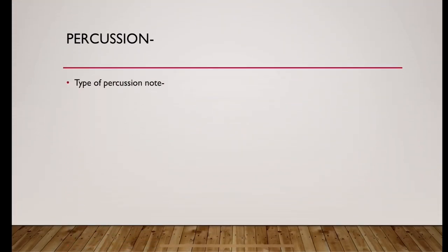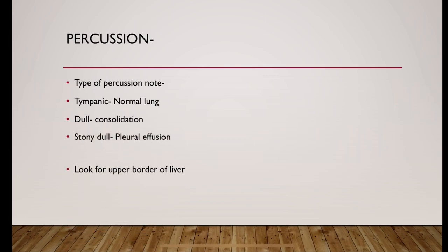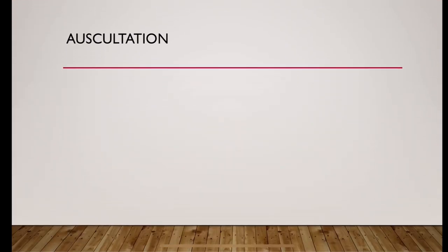Then do the percussion. Type of percussion note could be tympanic for normal lung, dull for consolidation, stony dull if there is any pleural effusion. Look for upper border of liver dullness and then do the auscultation.